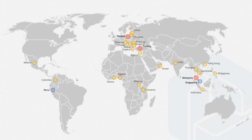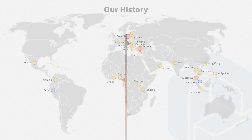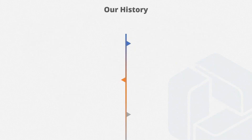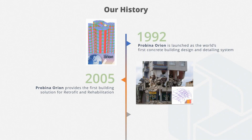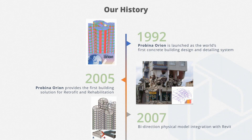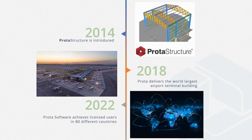As you can see, almost all territories are covered by our resellers or our offices. Since 1992, we have accomplished significant milestones, and when we come to the present, Prota Structure Suite is being supplied to 80 different countries.